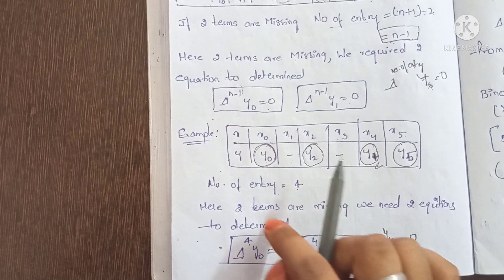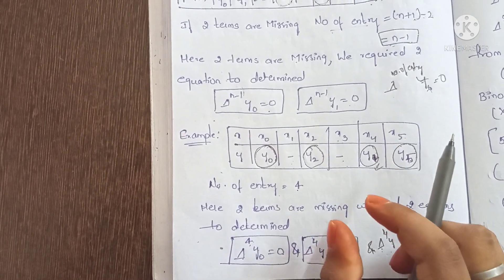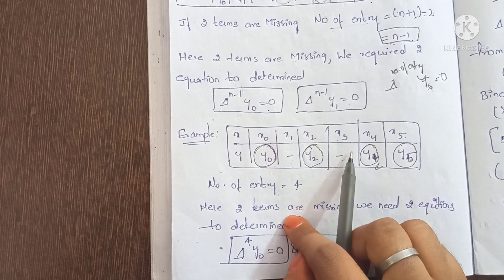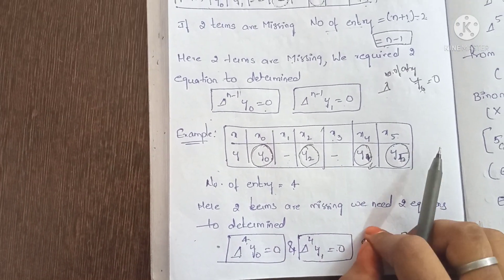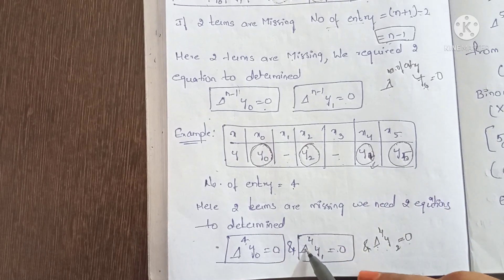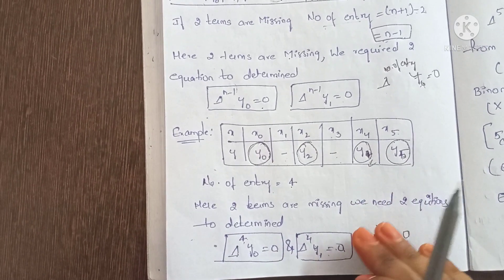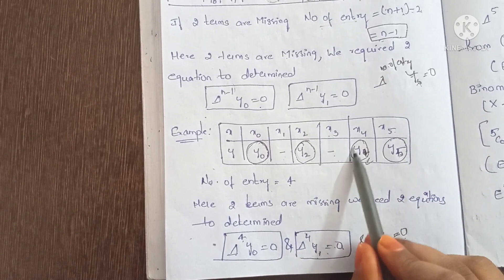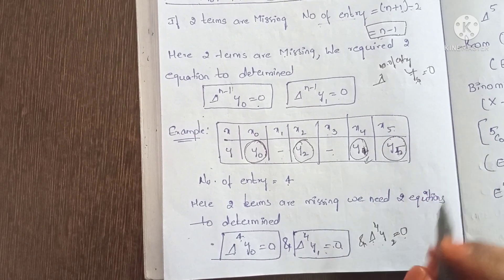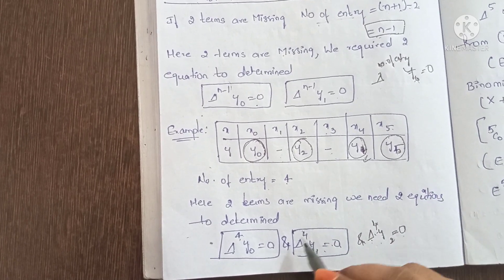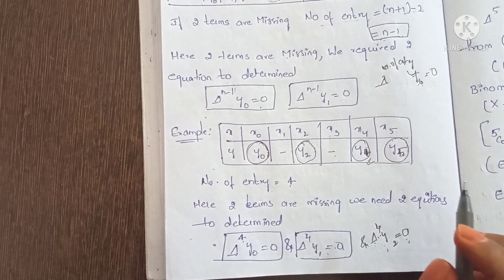Since n is missing and there are two missing terms, we have two equations: delta power 4, y0 equals 0, and delta power 4, y1 equals 0. If there were three missing terms, we would additionally have delta power 4, y2 equals 0.